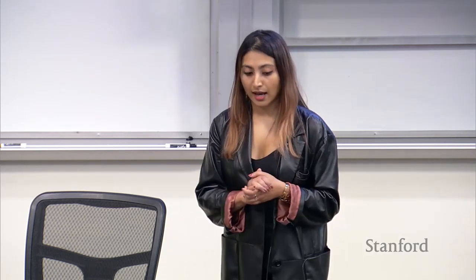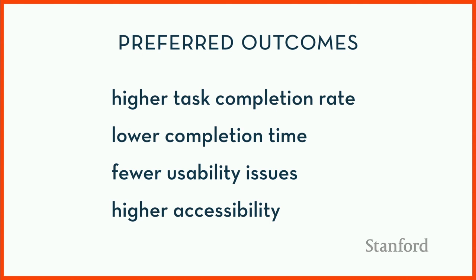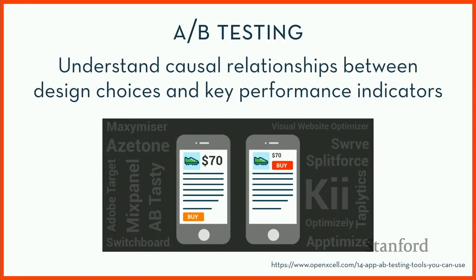Let's start with the domain of mobile app design. What's the preferred outcome for a mobile app? App designers care most about people being able to perform tasks — things like task completion rate, lower completion time, fewer usability issues, and building accessible UIs. When we say data-driven design in this space, we usually mean A/B testing, which is useful for understanding causal relationships between design choices and key performance indicators.